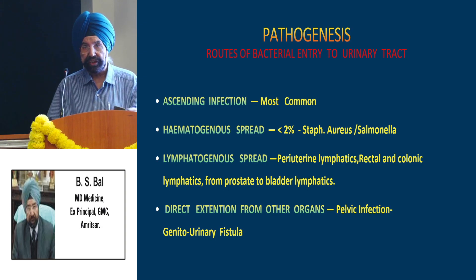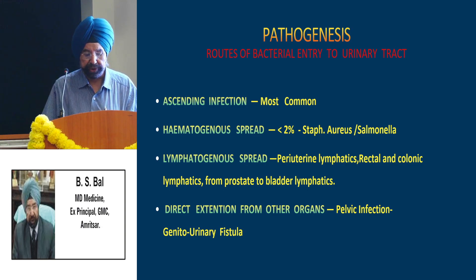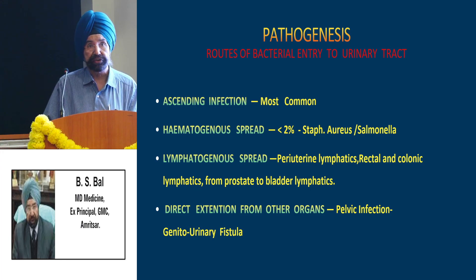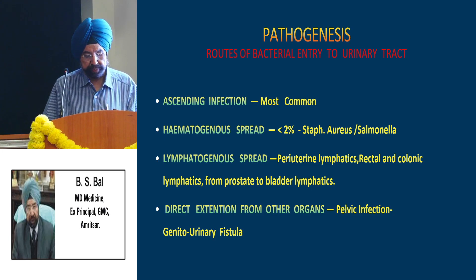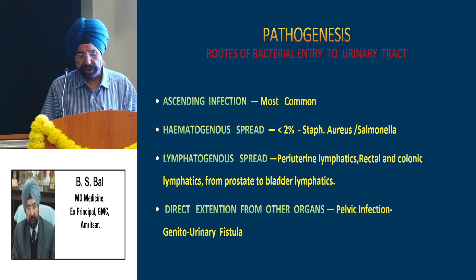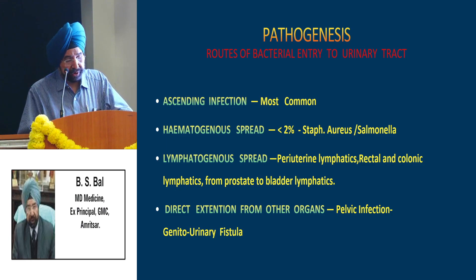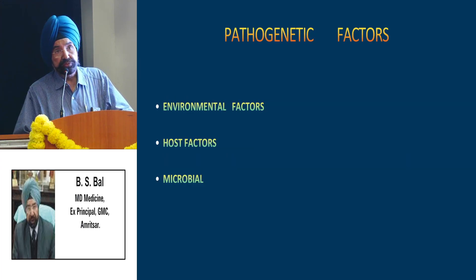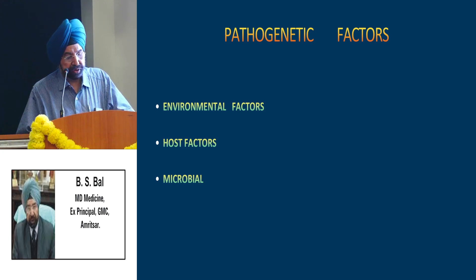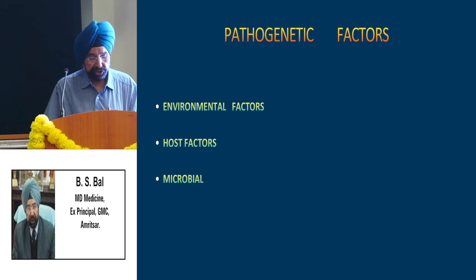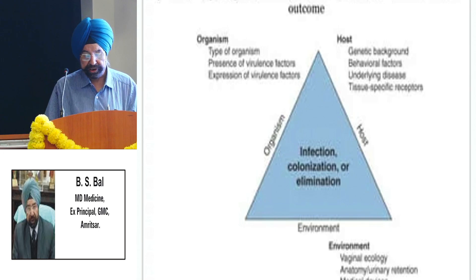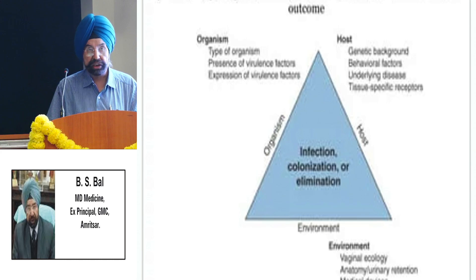Regarding pathogenesis, we discuss this under two to three headings. First, what are the routes of bacterial entry to the urinary tract? There are four routes. The most common is ascending infection, seen in about 80% of cases. Hematogenous spread is less than 2%, with Staph aureus or Salmonella being most common here. Lymphatogenous spread can come from periuterine lymphatics, rectal and colonic lymphatics, and from the prostate to the bladder. Rarely there can be direct extension from other organs like pelvic infection and genitourinary fistulas.